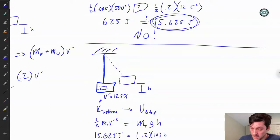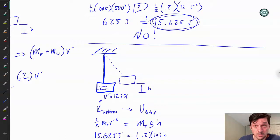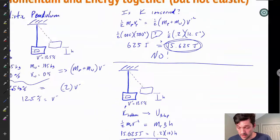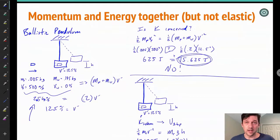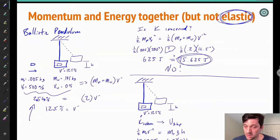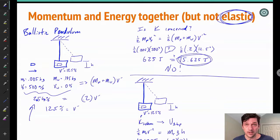Apparently that's a really fast bullet, but the bigger lesson is recognizing how both momentum and energy are involved in the total solution, but not applied at the same time — they're not both in play at the moment of the collision. You'll see more examples of problems like this until we get to elastic collisions, where kinetic energy actually is conserved, and that's a whole other set of algebraic challenges. See you next time.